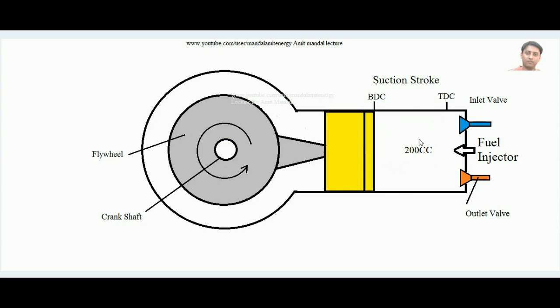This displacement, this is called engine displacement. The amount of air which is sucked inside by this piston is equal to 200 cc, for example.